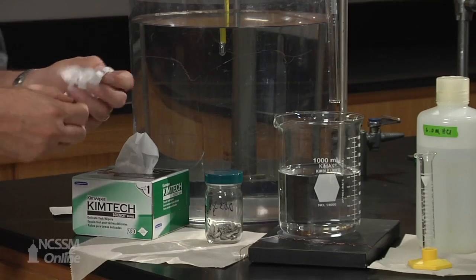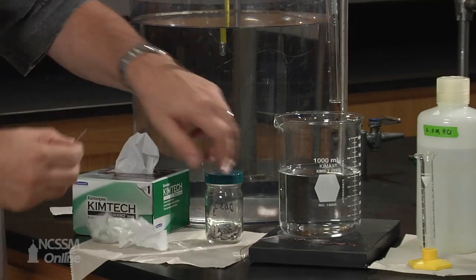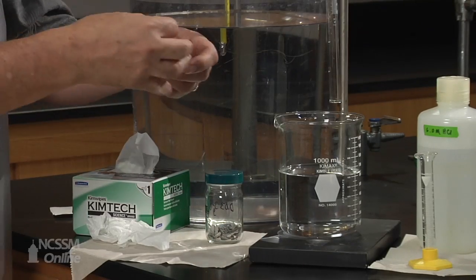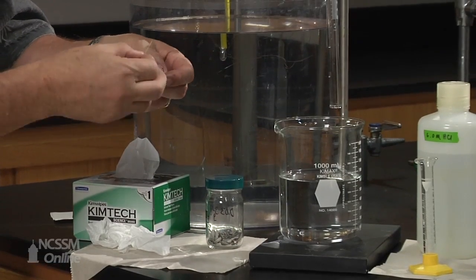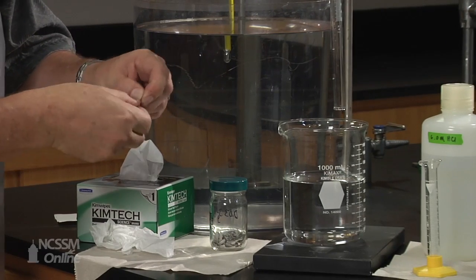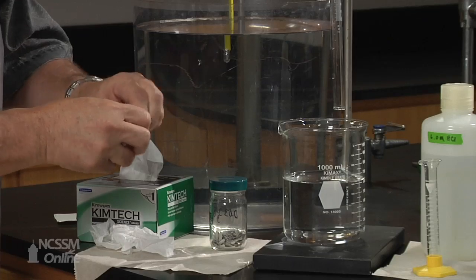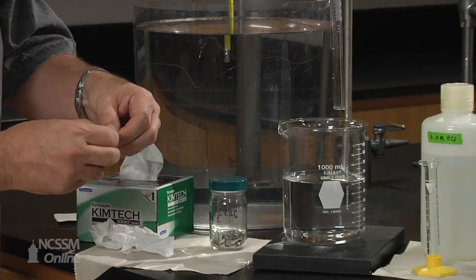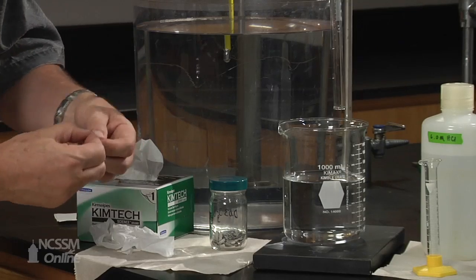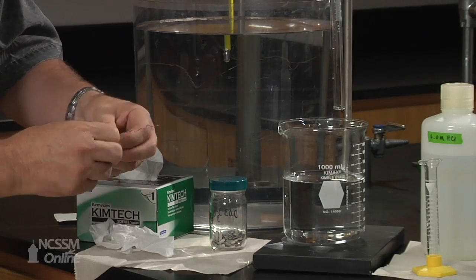So now that we have massed the magnesium, we can handle it with our fingers. And we're going to essentially place the magnesium strip in a cage of copper wire. So that during the reaction, the magnesium strip stays in its place and it doesn't float up and get caught on the side of the gas measuring tube.